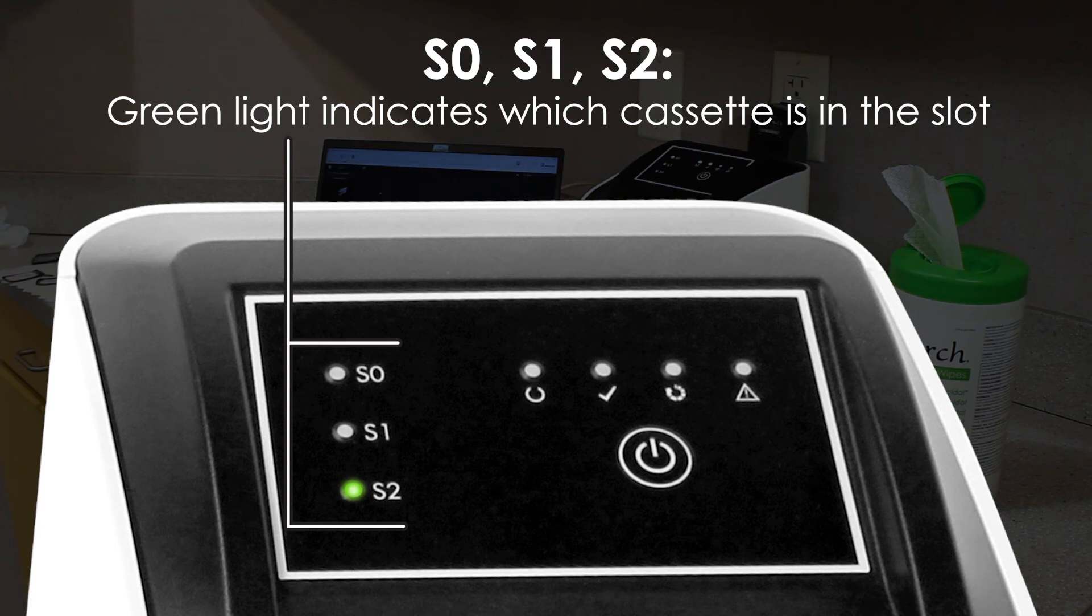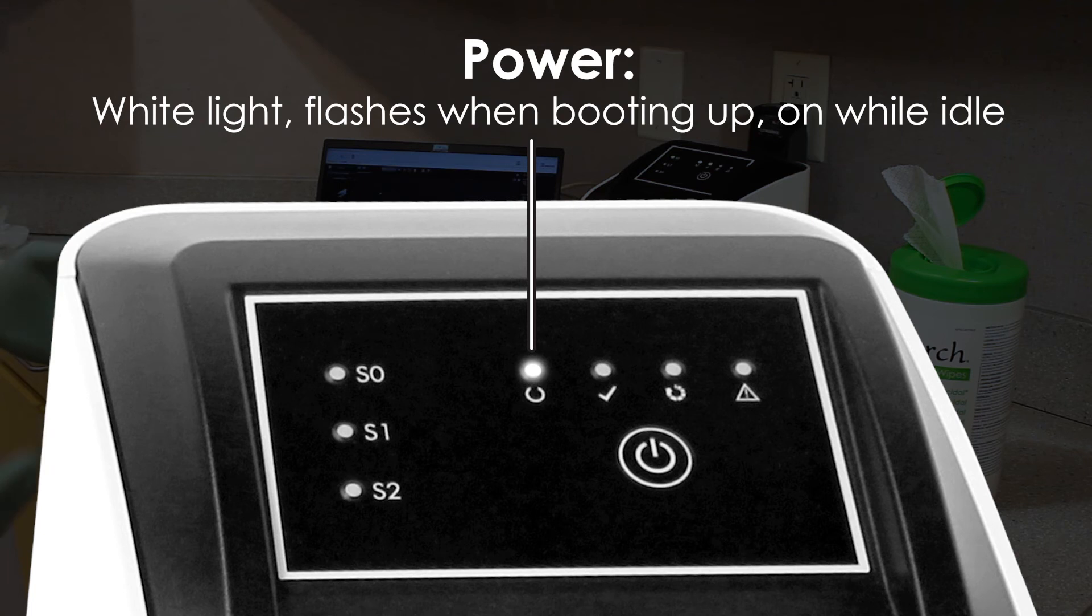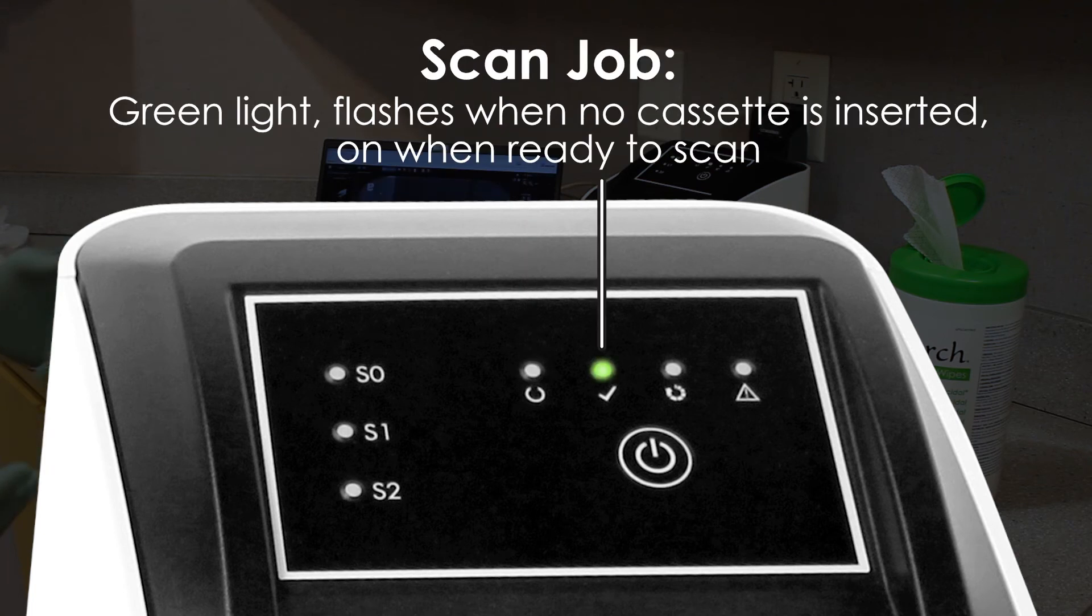The cassette indicators noted with S0, S1 and S2 will illuminate green depending on which size cassette we have inserted. The power status indicator will flash upon boot up and illuminate a solid white upon idle. The scan job indicator noted with a check mark will illuminate green when the system is ready to accept the scan job from the imaging software.